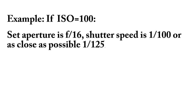Here is an example. If you're using ISO 100, set your aperture to F-16 and your shutter speed to 1/100th of a second, or as close as possible — 1/125th of a second. Some cameras do not have 1/100th of a second.